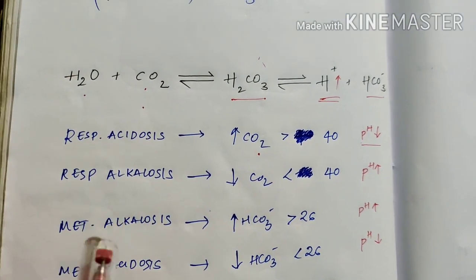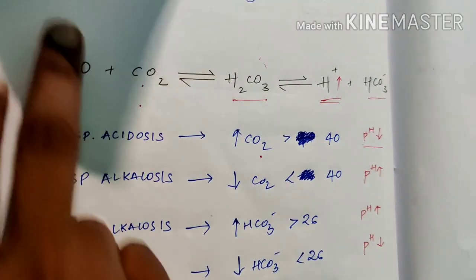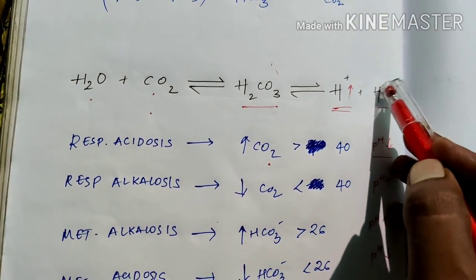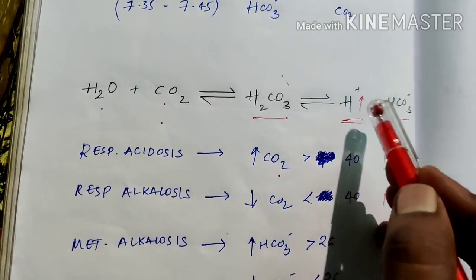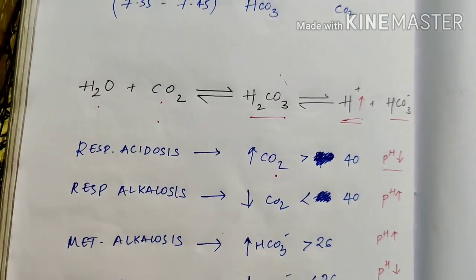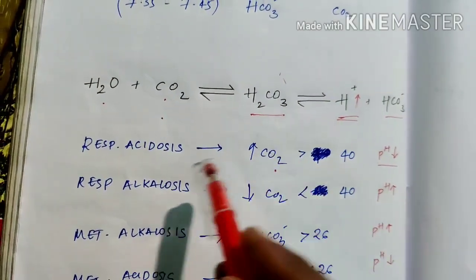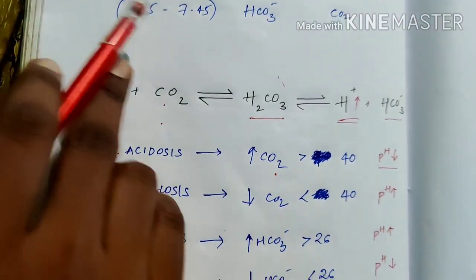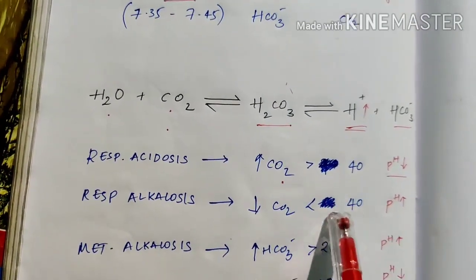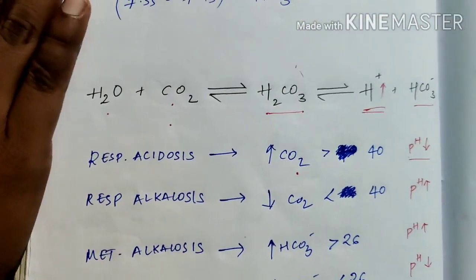When there is a metabolic problem, the kidney can't excrete HCO3 minus properly. Increased HCO3 minus binds more H plus, causing a deficit in free H plus. Less H plus means the fluid is alkaline and pH increases — that's metabolic alkalosis. Conversely, decreased HCO3 minus leaves more free H plus, making the fluid acidic with lower pH — that's metabolic acidosis.